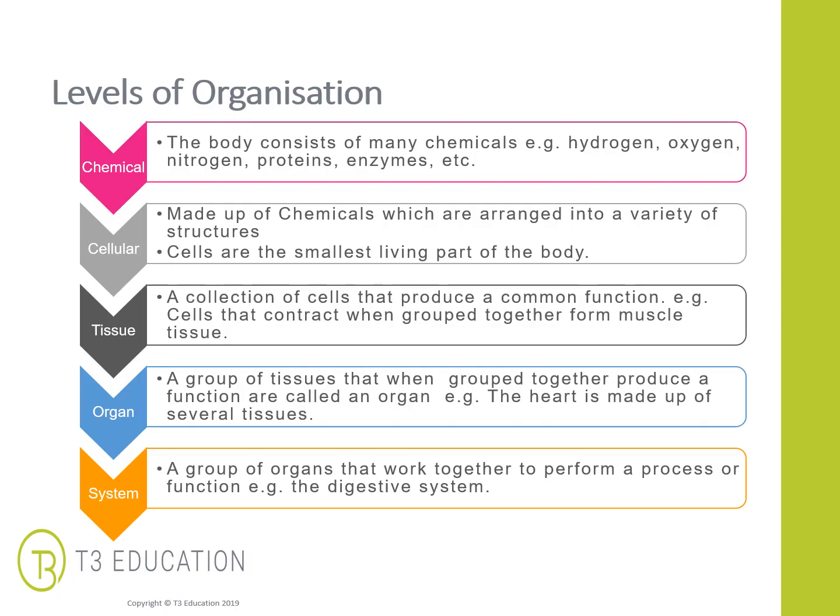There are levels of organisation within the body. We start with chemical — the body consists of many chemicals, for example hydrogen, oxygen, nitrogen, protein and enzymes — but all of these chemicals are arranged into a number of cells, so it's like a hierarchy. Cells are made up of chemicals and arranged into a variety of different structures. A cell is the smallest or most fundamental living part of the body.